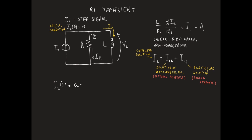The complete solution of the non-homogeneous equation IL will be given by A times e^(-t/τ), where τ is L over R, plus the particular solution A.